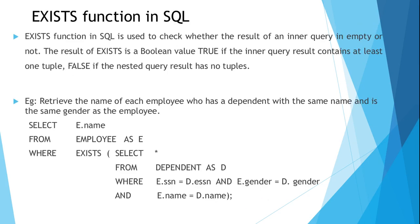Now we will see another function in SQL: the EXISTS function. The EXISTS function is used to check whether the result of an inner query exists, or whether the result of an inner query is empty or not. The result of EXISTS is a boolean value. It will be true if the inner query result contains at least one tuple. If the inner query has no tuples, then EXISTS returns false.